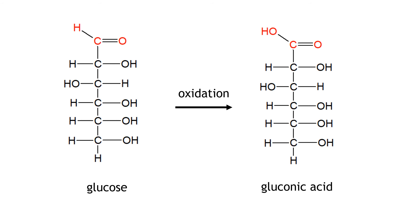This diagram shows what happens to glucose during its reaction with Tollens' reagent. Glucose has an aldehyde group, so it can be classed as an aldehyde. During the oxidation of glucose, the aldehyde group becomes a carboxylic acid group — so glucose can be oxidised to the carboxylic acid gluconic acid.